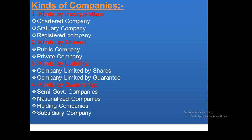Holding companies: if a company controls another company, it is called a holding company. This is another kind by ownership. Semi-government companies are those that are partly owned and managed by the government.